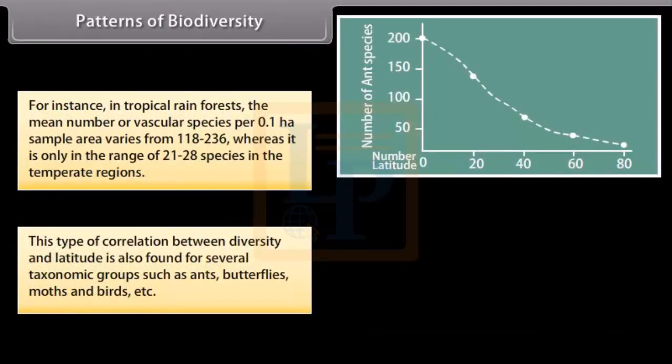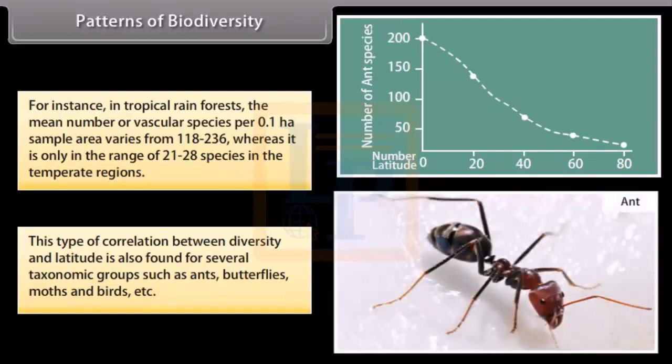whereas it is only in the range of 21 to 28 species in the temperate regions. This type of correlation between diversity and latitude is also found for several taxonomic groups such as ants, butterflies, moths, and birds, etc.